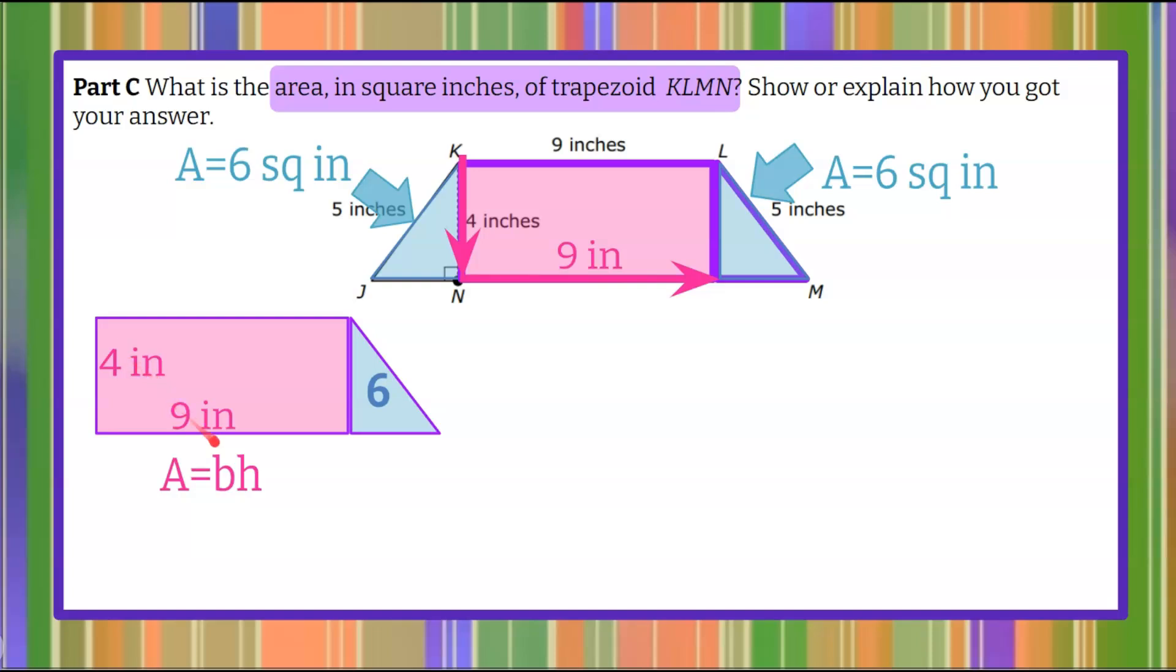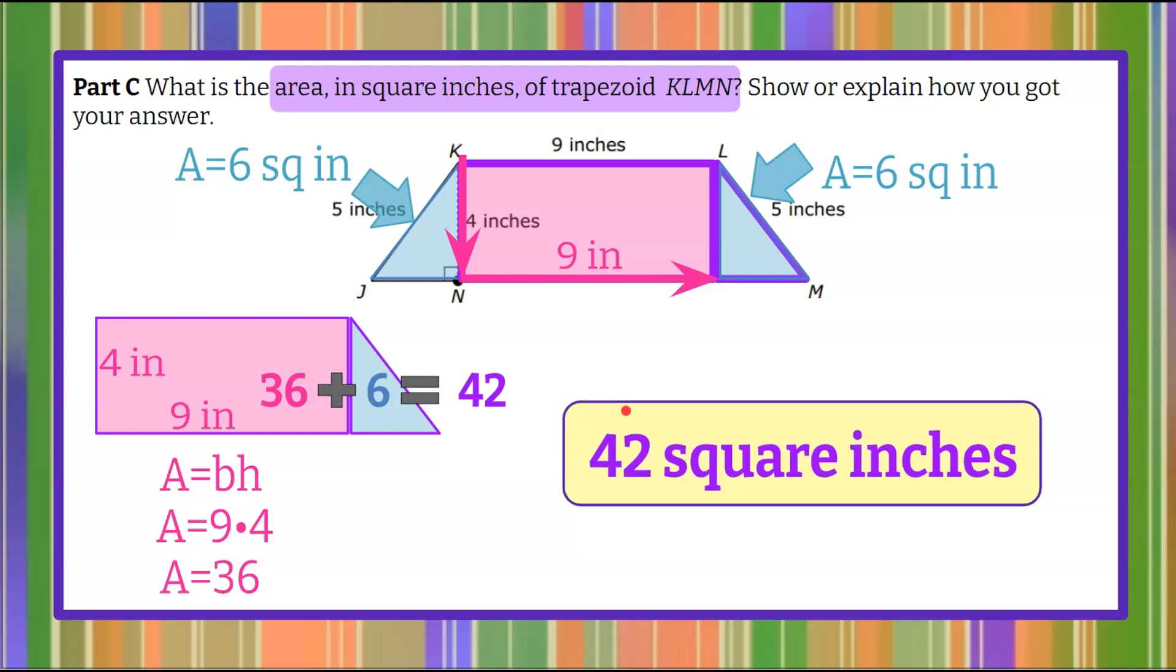So 9 of our base multiplied by a height of 4. 9 times 4 is 36. 4 times 9 is 36. Order doesn't matter when you're finding the product. So the area of the rectangle is 36. We're going to add the area of the rectangle and we get 42. So this trapezoid is 42 square inches. Remembering it's just KLMN, so this triangle was not included in that.